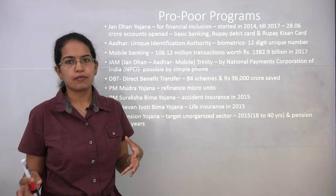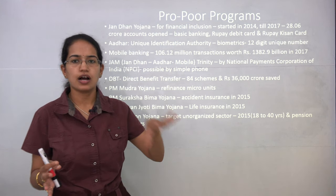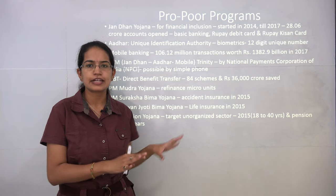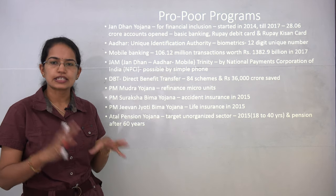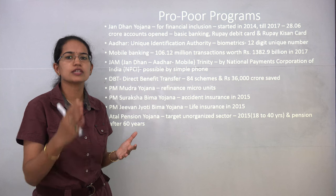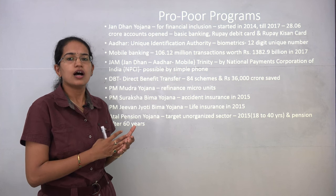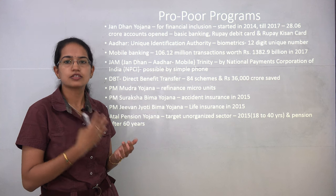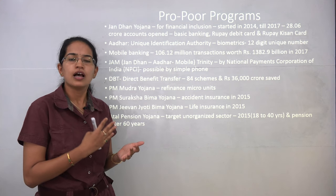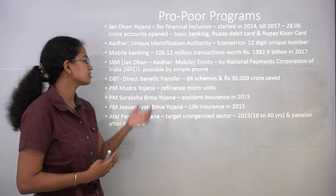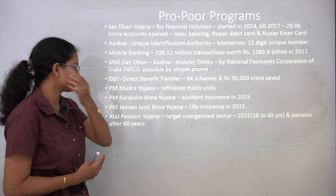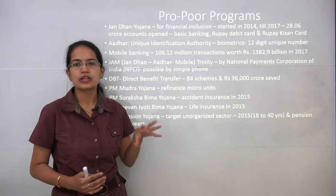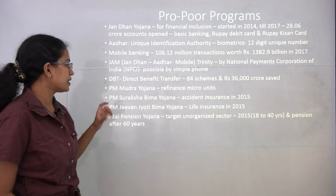JAM is possible with just a simple phone. Direct Benefit Transfer (DBT) removes intermediaries — any sanctioned amount goes directly into bank accounts. All scholarships, funds, and schemes reaching rural education, infrastructure, and housing are directly transferred to bank accounts. PM MUDRA Yojana talks about refinancing micro units. PM Suraksha Bima Yojana provides accidental insurance, and Jeevan Jyoti Bima Yojana provides life insurance — both launched in 2015.